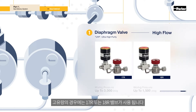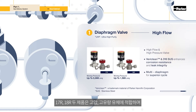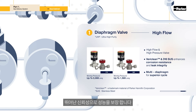For high flow capacity, 17R and 18R valves are used. The 17R and 18R are suitable for high pressure and high flow fluids, and ensure performance with excellent reliability.